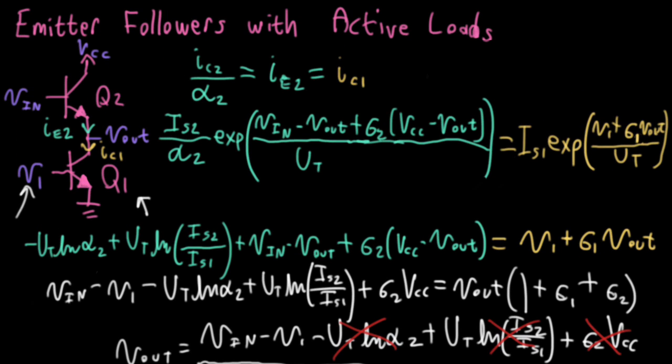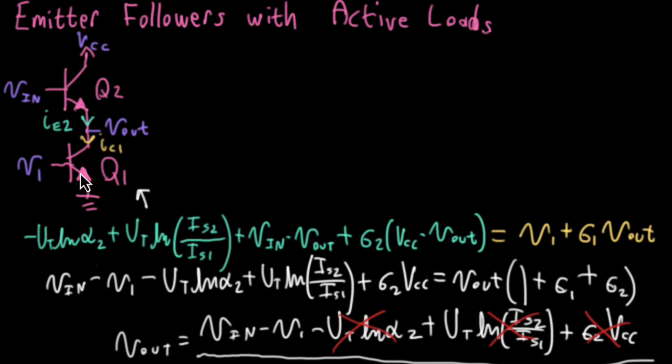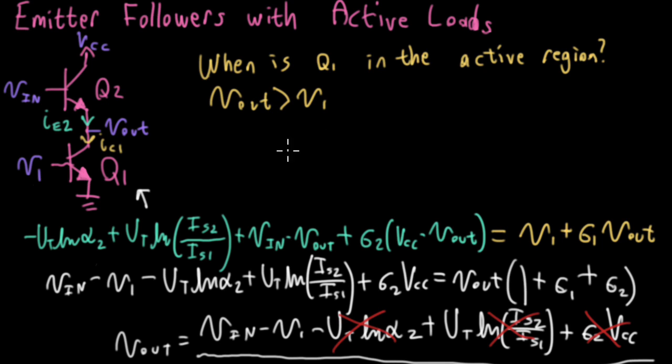We should actually talk about that a little bit. My derivation assumed that the transistors were in the active region, and not in what for BJTs is called saturation, but what I prefer to call the ohmic region. So when is Q1 in the active region? For it to be in the active region, we need its collector voltage to be higher than the base voltage. So I need Vout to be bigger than V1. So under the various assumptions we made, we wound up saying that Vout is equal to VN minus V1. So we really need VN to stay in the region where it's bigger than twice whatever V1 is.